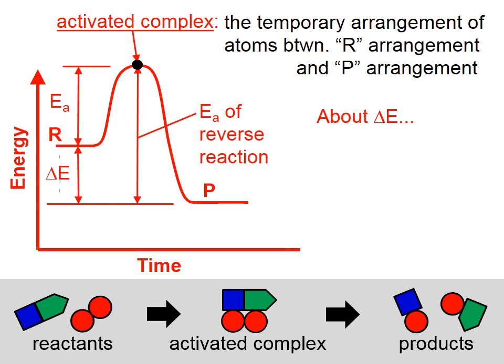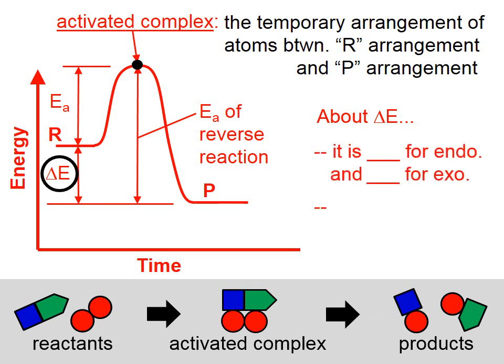Let's talk about delta E, which I've circled on the diagram. That is the difference in the internal energy of the reactants compared to the products. Delta E is positive for endothermic processes and negative for exothermic processes.